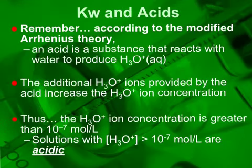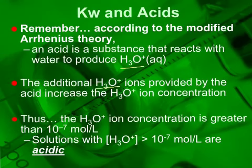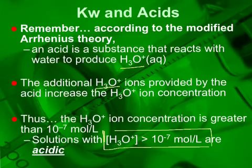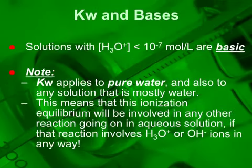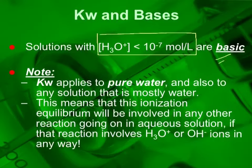Going back to the modified Arrhenius theory, an acid is any substance that produces hydronium. If there is additional hydronium, its concentration must be greater than 1×10⁻⁷ moles per liter — so solutions with [H₃O⁺] greater than 1×10⁻⁷ are considered acidic. On the other hand, if the concentration of hydronium is less than 1×10⁻⁷ moles per liter, that solution is considered basic.